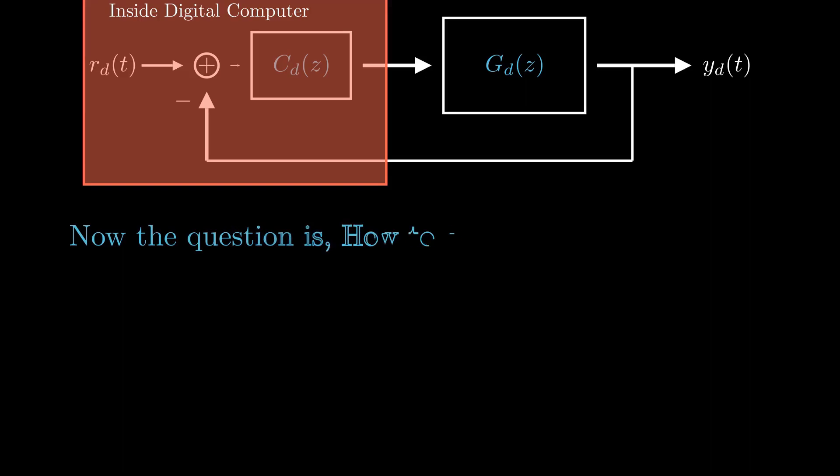Now the question is, how to transform C(s) into C_D(z)? Transforming the analog controller into digital domain is quite straightforward. We mainly focus on three methods to perform this task.